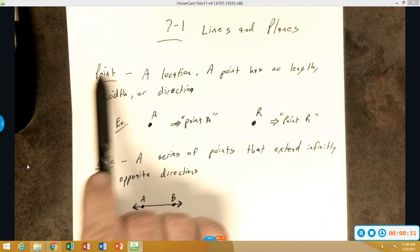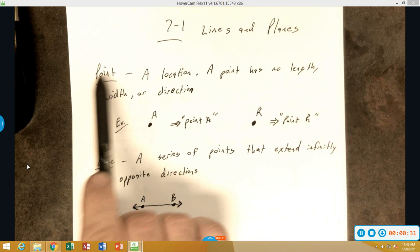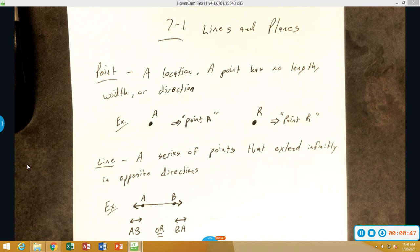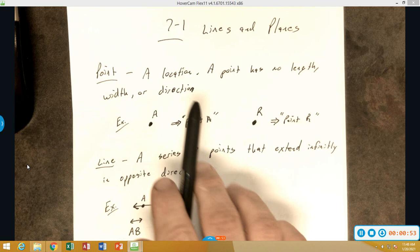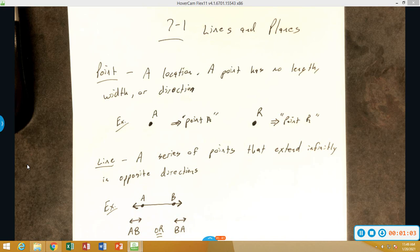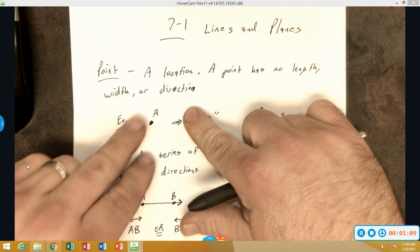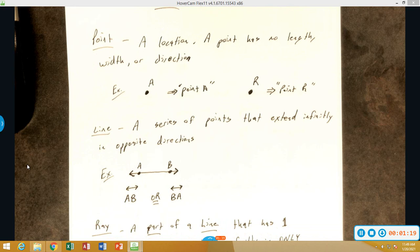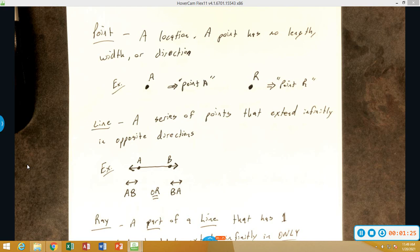We've got several different definitions here that we're going to go through. First off is a point. A point is just a location. Just like we did when we were graphing on the XY coordinate grid, we graphed many different points. Those single points marked a certain location. A point has no length, no width, or direction.